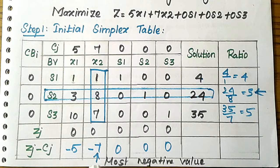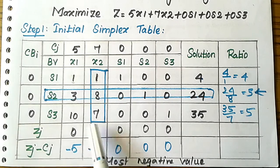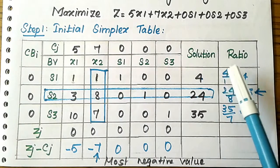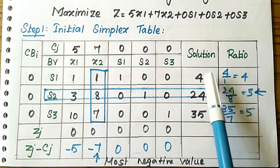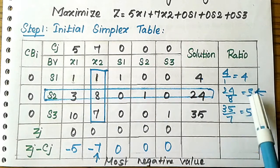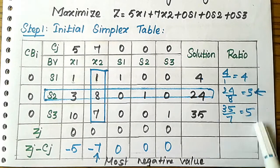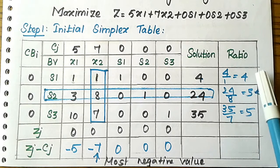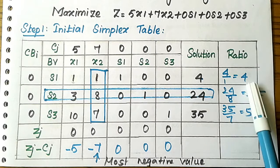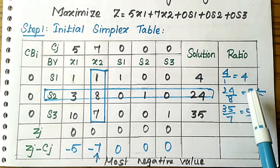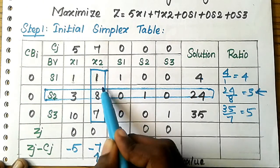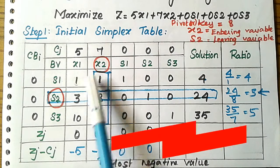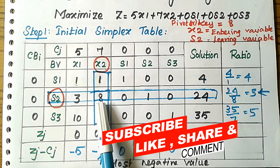So s2 is our leaving variable. To recap: to choose the entering variable, select the most negative value from the Zj − Cj row. Then divide the solution column by the pivot column to get ratios: 4, 3, 5. The minimum positive ratio is 3, so that row is the pivot row, s2 is the leaving variable, x2 is the entering variable, and 8 is our pivot element. In the next video we will see Step 2.